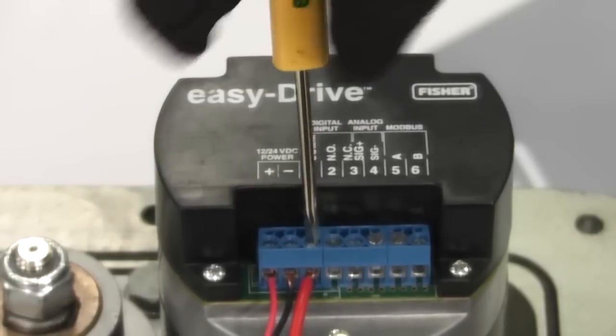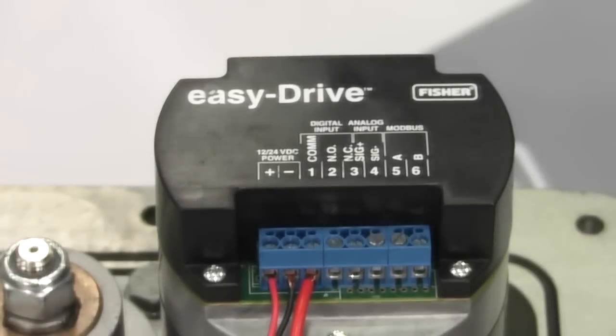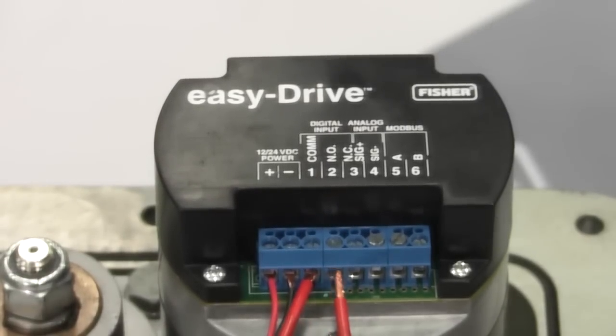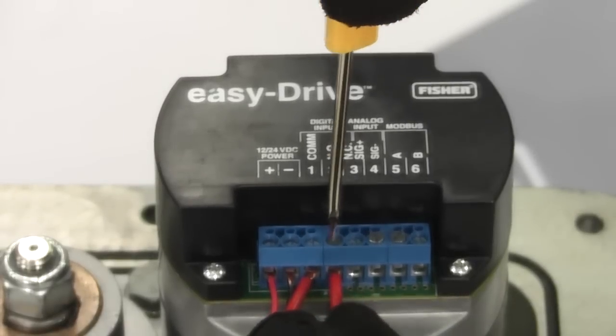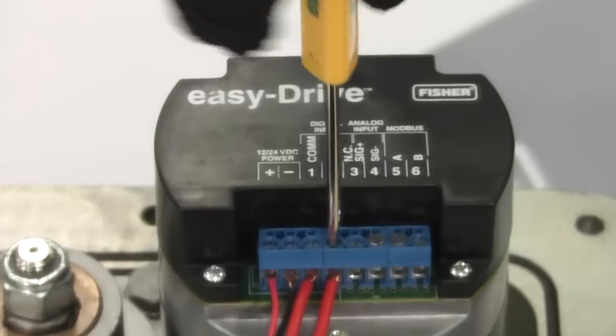When operating the valve in the single dry contact mode, the EZ-Drive should be connected to the two switch wires at the common and normally open terminals. Terminals 1 and 2 respectively.